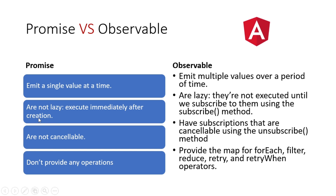Promises are not lazy — they execute immediately after creation. Observables are lazy; they are not executed until we subscribe to them using subscribe. In order to get data from an Observable you need to subscribe to it. Since you can subscribe to an Observable, you can also unsubscribe from it, whereas since you don't need to subscribe to a Promise, you also cannot cancel it.